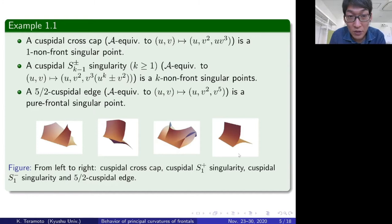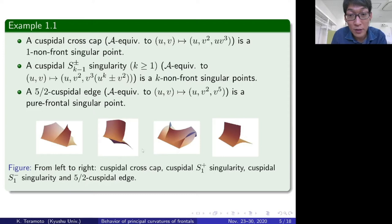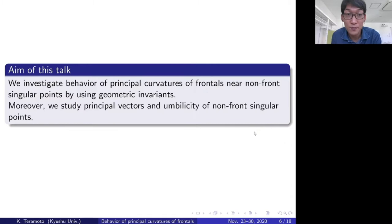These are the pictures of these surfaces and mappings. From left to right: a cuspidal cross cap, a cuspidal S1+ singularity, a cuspidal S1− singularity, and a (2,5)-cuspidal edge.